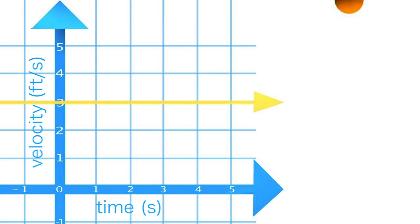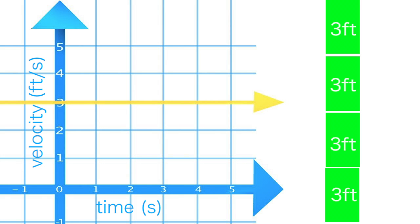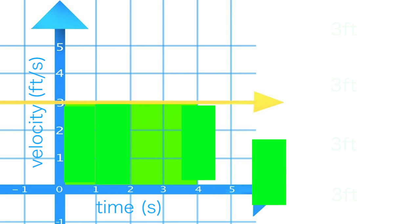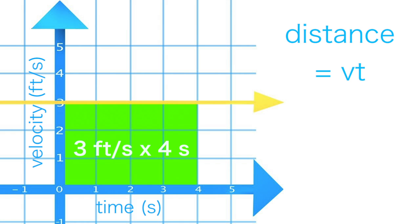If an object is moving at 3 feet per second, we can plot its velocity as a straight line on this graph of velocity versus time. We can also find the distance that object has traveled by finding the area under this line, because the area is a rectangle of width equal to time and height equal to velocity. So its area is velocity times time, which is the distance for an object traveling at a constant velocity.